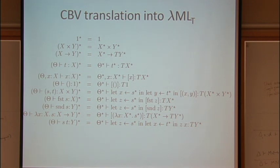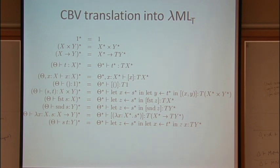This tells you exactly the order in which the evaluations are supposed to happen. So S applied to T — translate — is: let Z be the translation of S, let X be the translation of T in Z applied to X. And if you check everything, this has the right type.